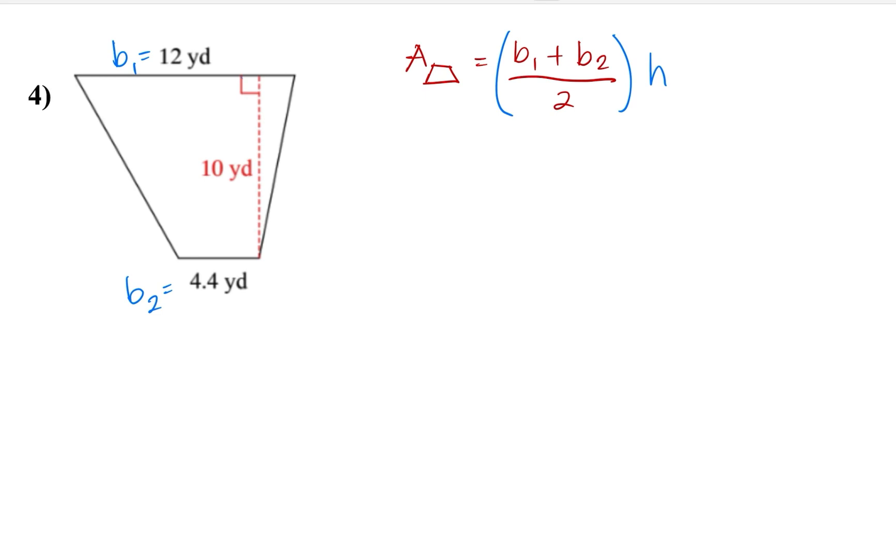And this right here creates a right angle, which is 90 degrees. Therefore this one, this number here, 10 yards, is the height. Let's substitute: our base sub 1 is 12 plus 4.4 divided by 2 times the height, which is 10 yards.